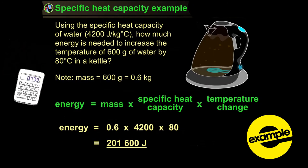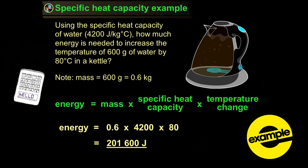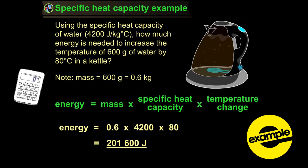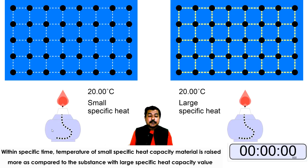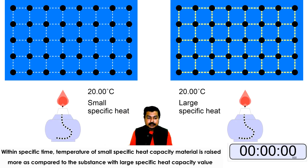A sample calculation is shown on screen — you can see how we find the specific heat capacity by substituting values and finding the product. Now let's compare two substances: one with a small specific heat and one with a large specific heat.